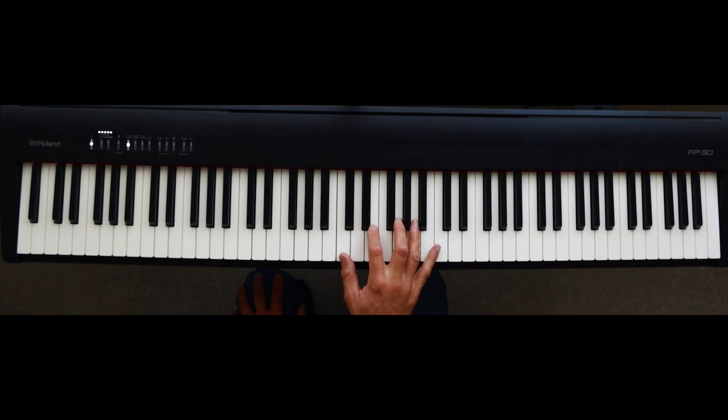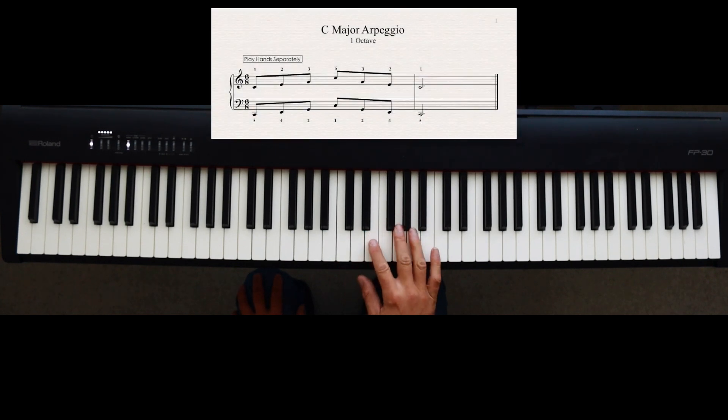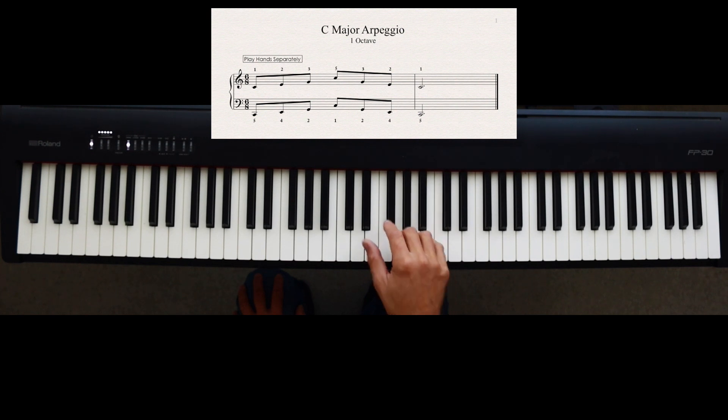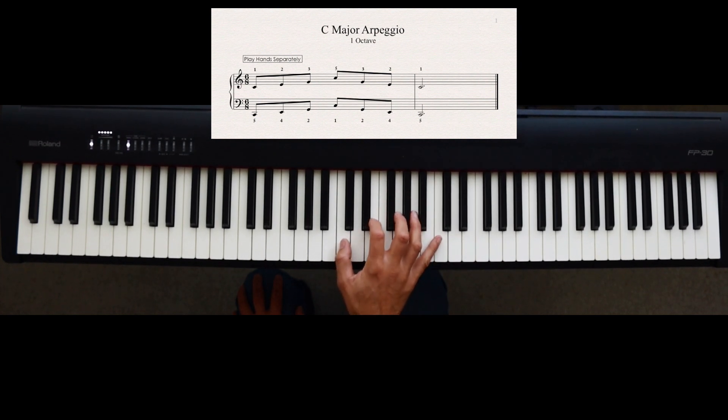Here it is in the right hand, the arpeggio spanning 1 octave. I'll use the fingers 1, 2, 3 and then I'll come to C at the top with finger 5. So that's the C major arpeggio. Up and down now. Again.